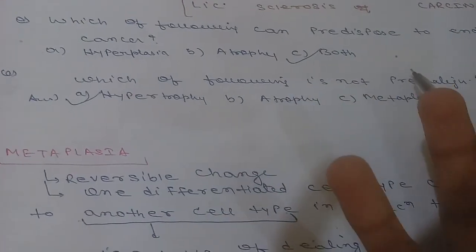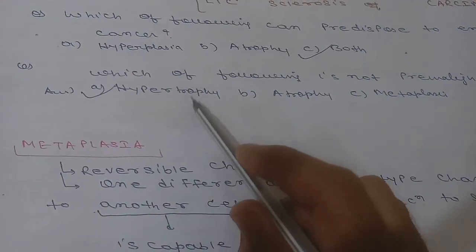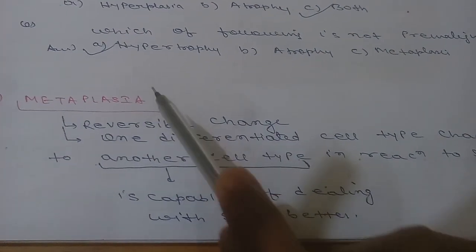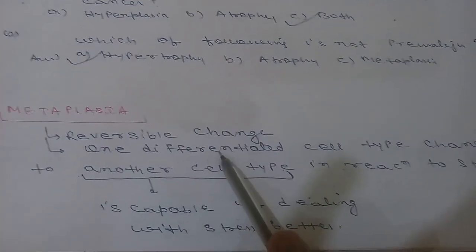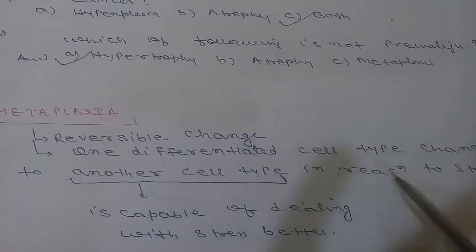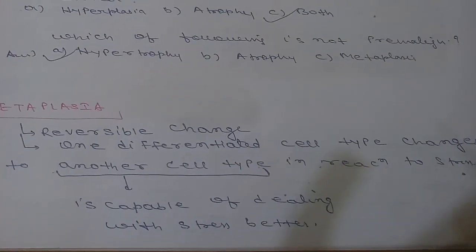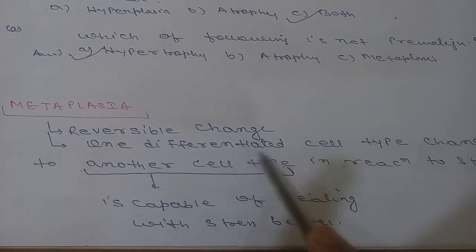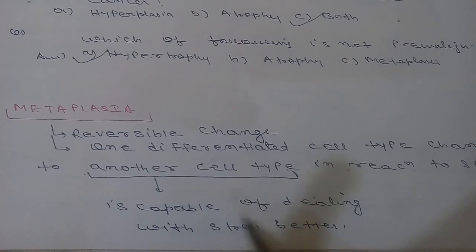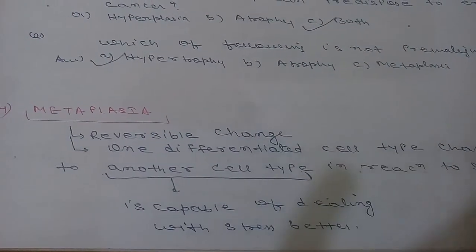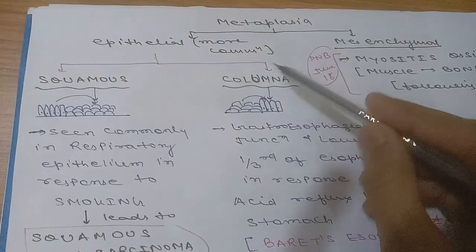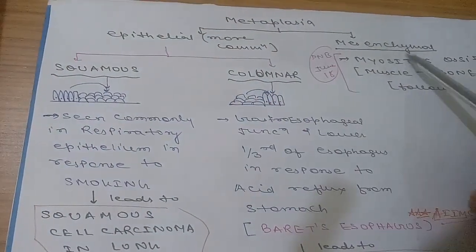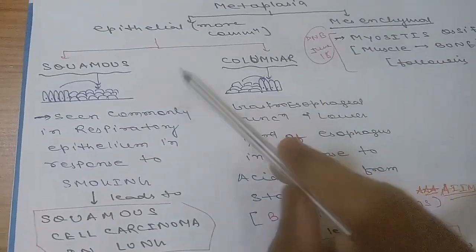Both atrophy and hyperplasia can predispose to endometrial cancer. Hypertrophy is not premalignant because it is just an increase in cell size, not affecting cell number. Metaplasia is a reversible change where one differentiated cell type changes into another cell type in response to stress, and this new cell type is better capable of dealing with the stress.